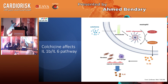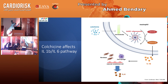Actually, colchicine acts by a very smart way. Colchicine inhibits the formation of the microtubules, which are responsible for the inflammasome. If the inflammasome didn't work, the interleukin-1-beta will not be activated and we will not obtain interleukin-6. And this could block the inflammatory response underpinning the pathophysiology of atherosclerosis.